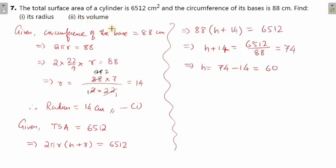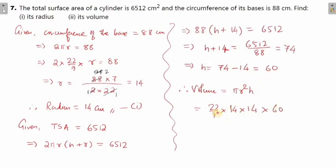Now the question is asking us to find the volume. The volume formula is πr²h. So π is 22/7, r is 14, r² is 14 × 14, and h is 60. Doing the cancellation — 7 cancels with 14 giving 2 — we get 22 × 2 × 14 × 60, which equals 36,960. Since this is volume, the unit is centimeter cube. You may pause the video and note down your solution.